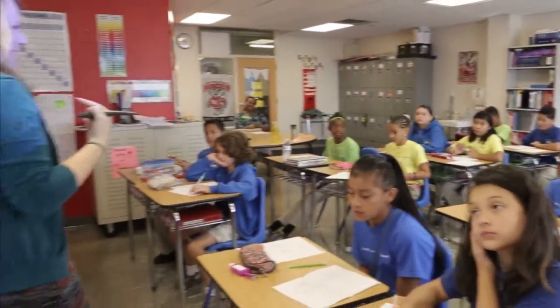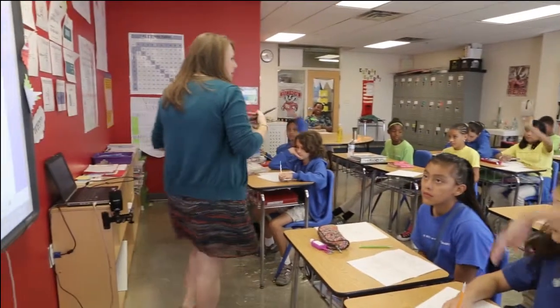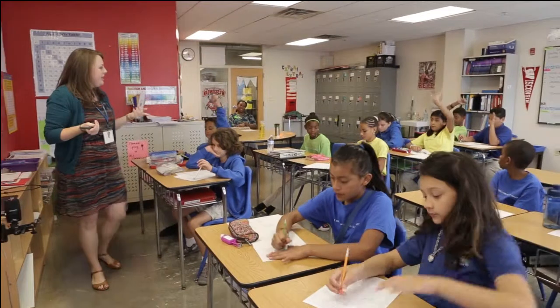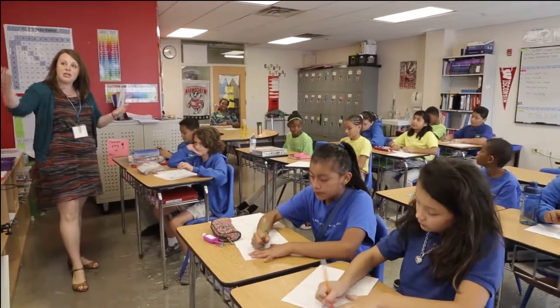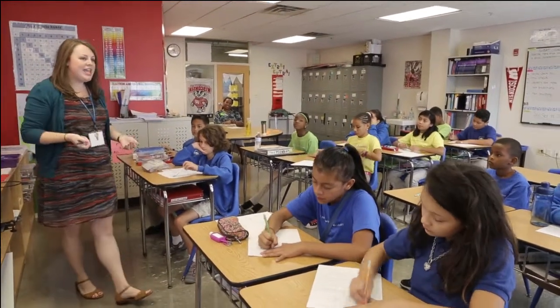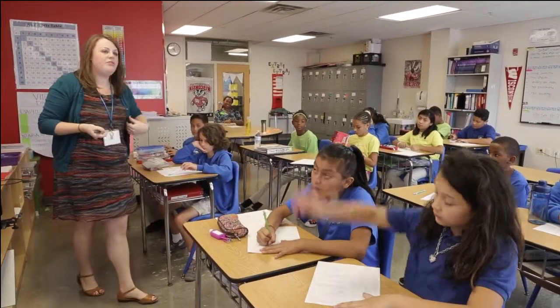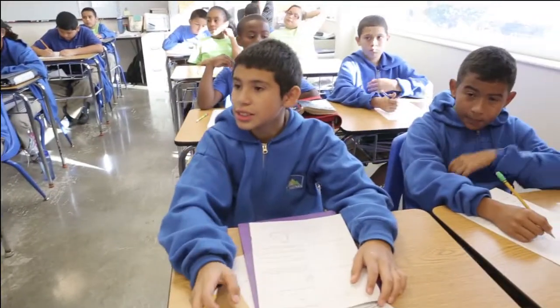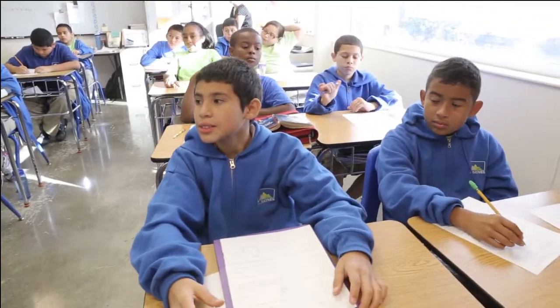Our B stands for what? B is the what? Daniela? Base. The base or the bottom of our shape. And what does the H stand for, Jeffrey? The height. The height. Perfect. About 60.